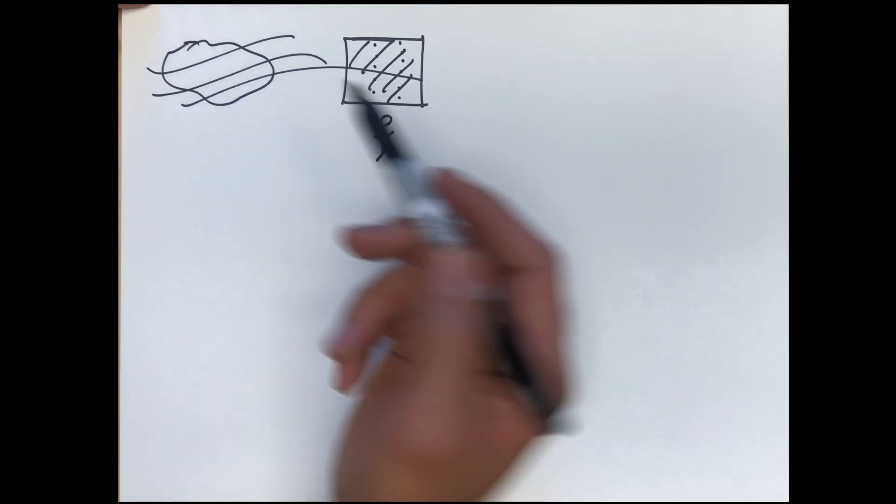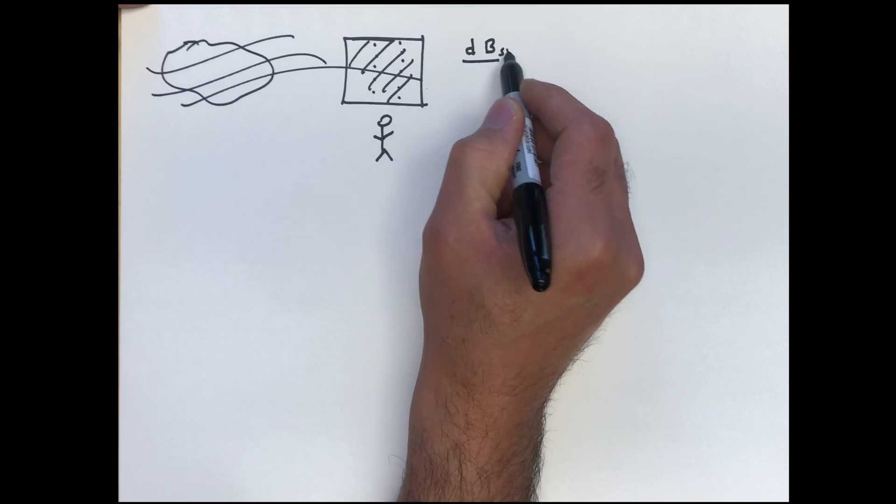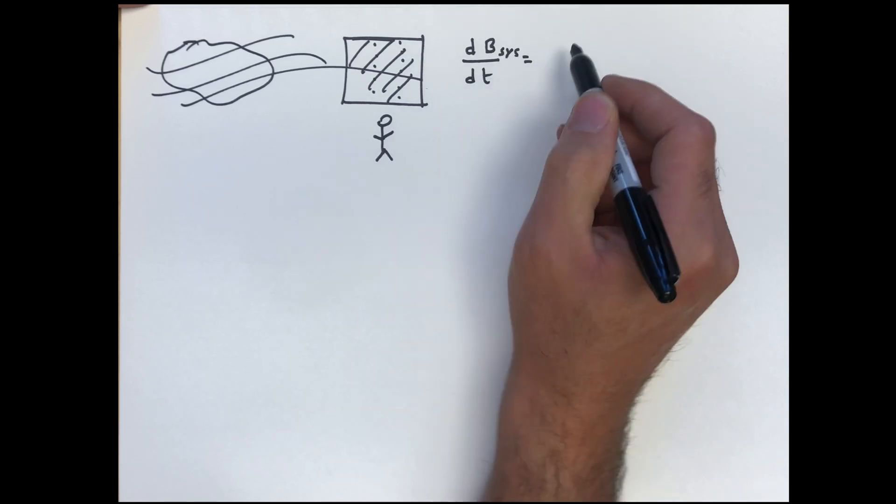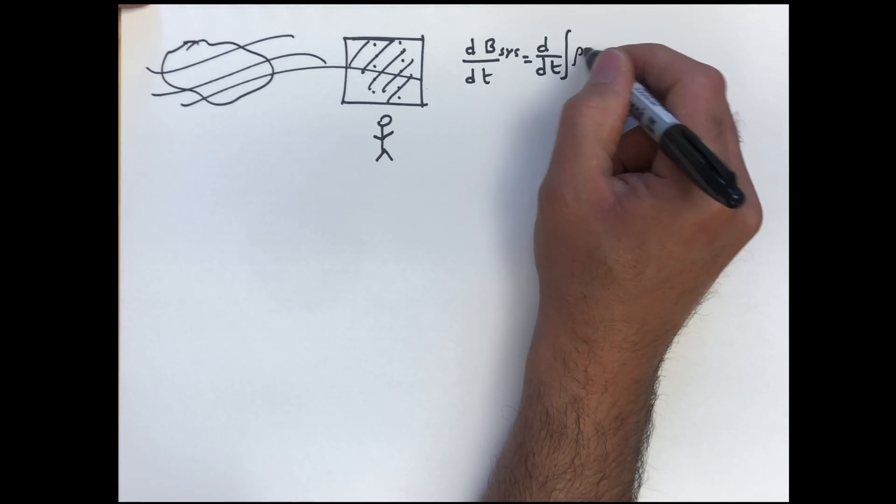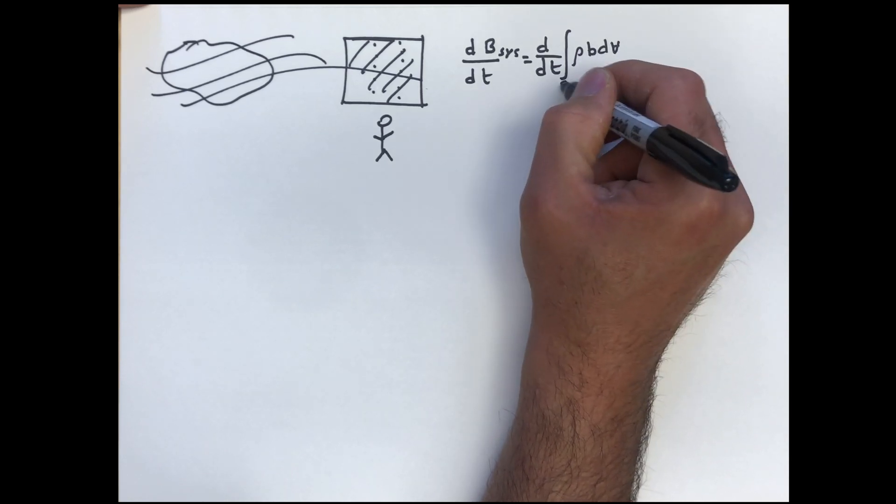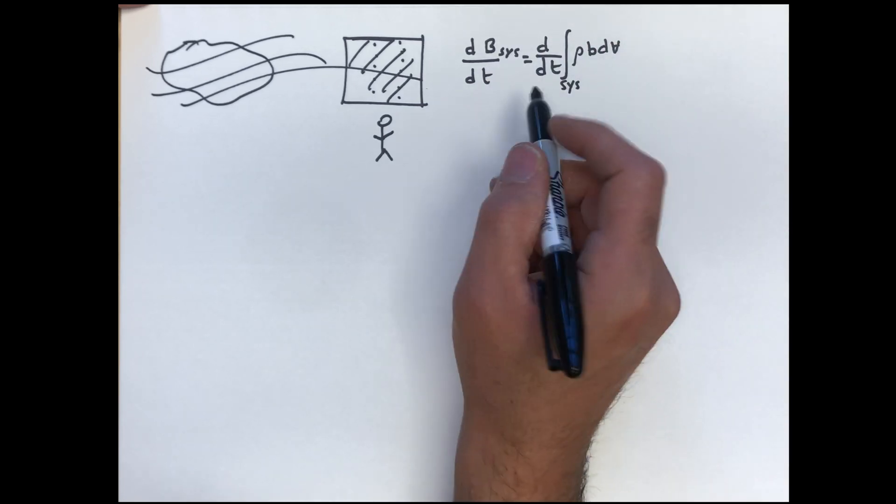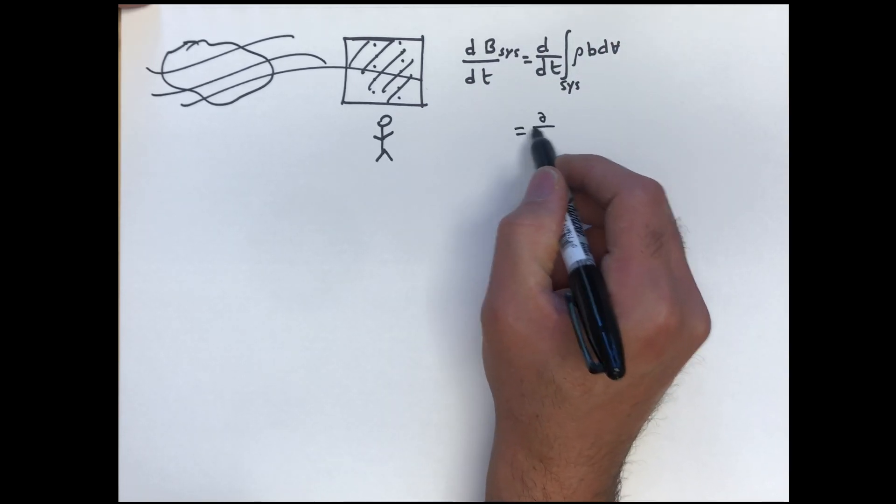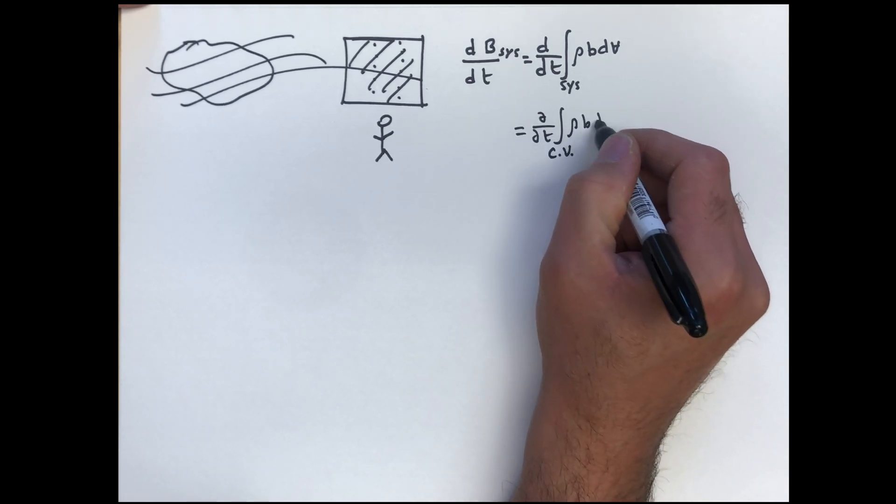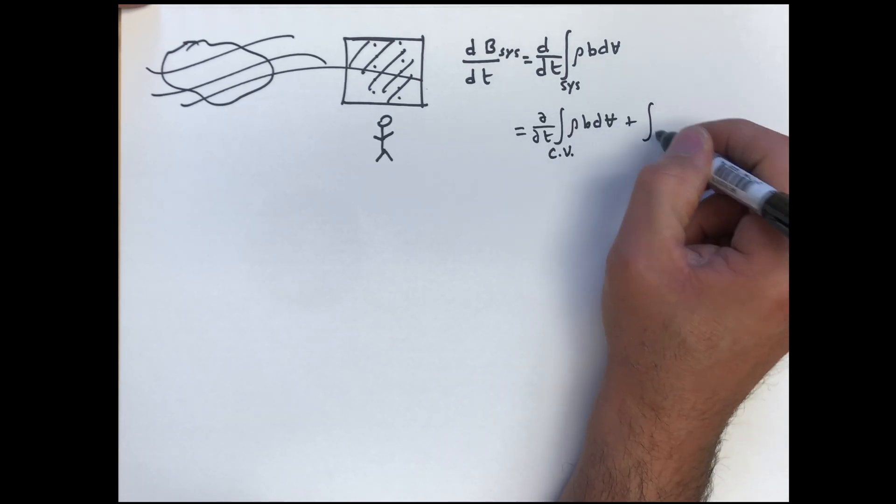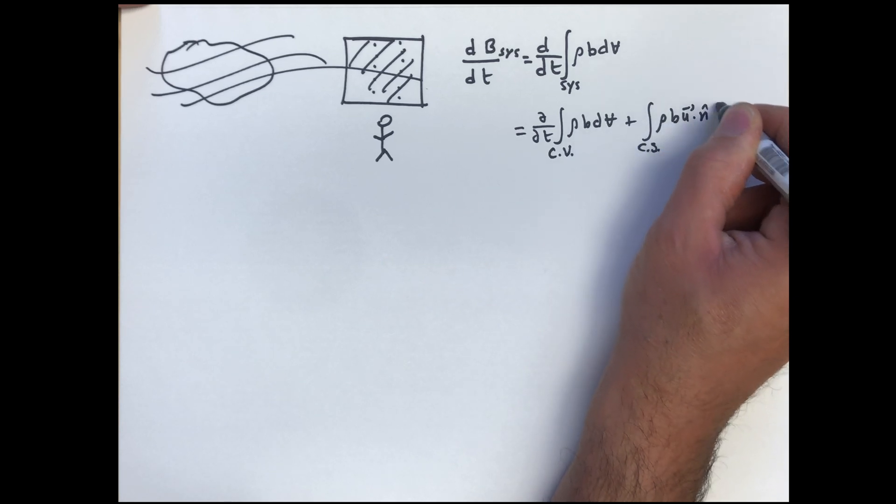We're still not there yet because the form of the Reynolds transport theorem is integral, and that's given by dB_sys/dt equals d/dt of the integral of ρb dV over the system. Remember that this was an intensive property and this was an extensive property, and that was shown to be equal to ∂/∂t of the integral over a control volume, ρb dV over control volume plus the surface fluxes, ρb u·n dS.